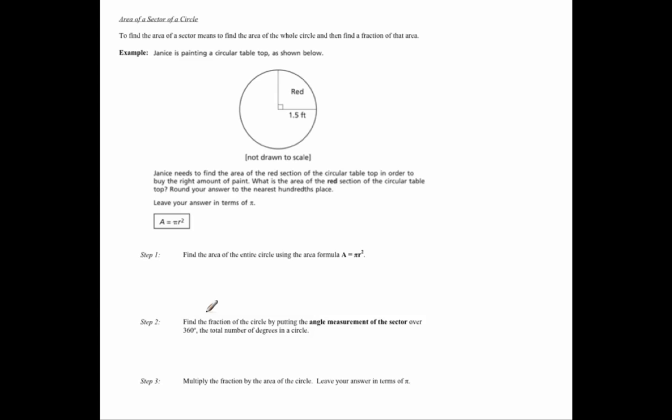Looking at the problem, we're going to keep going through the steps, then we'll look up here. Next step is to find the fraction of the circle by putting the angle measurement of the sector over 360 degrees, the total number of degrees in a circle. By doing this, you'll find out what fraction of the entire circle you actually want to find the area of. Last step is to multiply the fraction from step two by the area of the entire circle in step one, and don't forget to leave your answer in terms of pi.